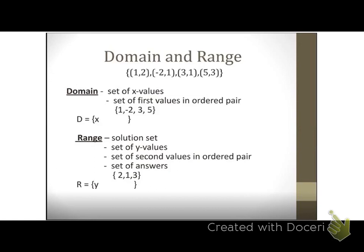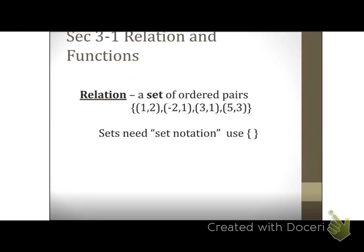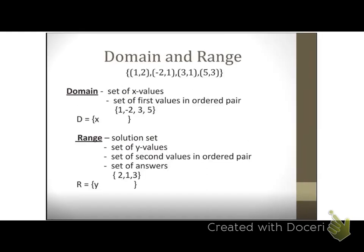Earlier we had a relation. Relations are sets of ordered pairs, correct? Every ordered pair has an X and a Y. X is always written first, Y is always written second. So we can split our relation into what we call our domain and range. The domain is just our set of X values — it's our set of first values in our ordered pairs because X will always come first.